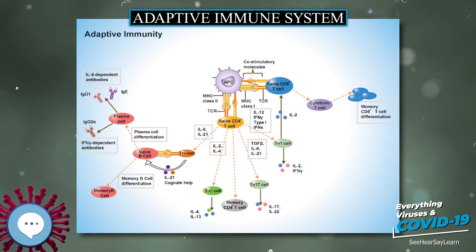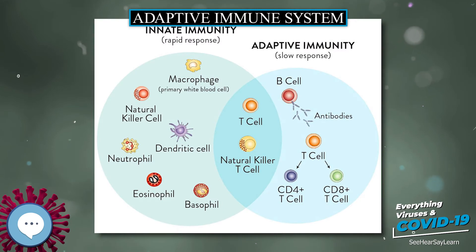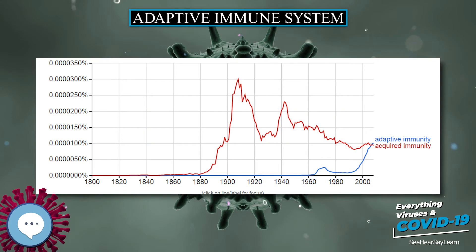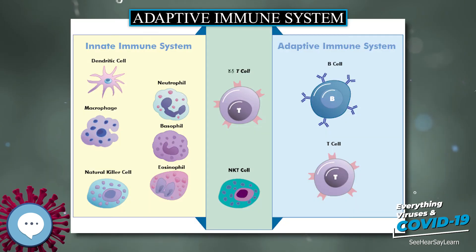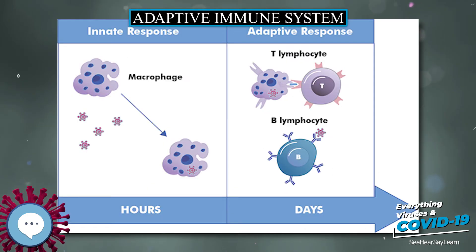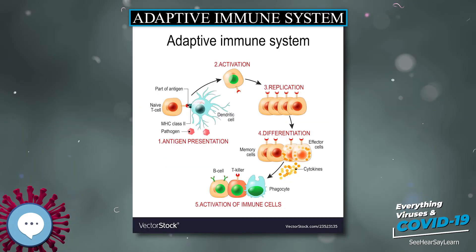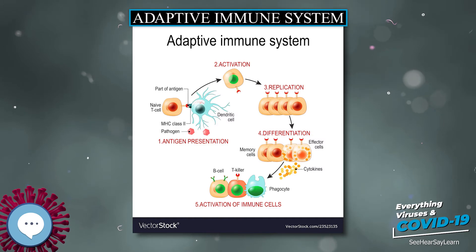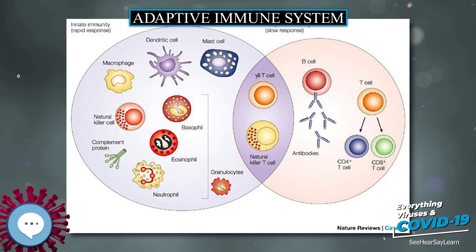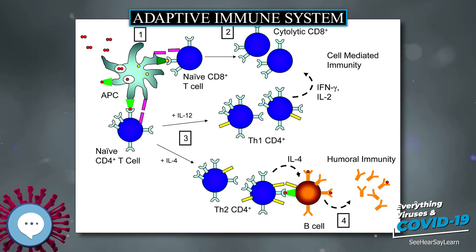Two types of effector CD4+ T helper cell responses can be induced by a professional APC, designated Th1 and Th2, each designed to eliminate different types of pathogens. The factors that dictate whether an infection triggers a Th1 or Th2 type response are not fully understood, but the response generated plays an important role in the clearance of different pathogens. The Th1 response is characterized by the production of interferon-gamma, which activates the bactericidal activities of macrophages and induces B cells to make opsonizing and complement-fixing antibodies, leading to cell-mediated immunity. In general, Th1 responses are more effective against intracellular pathogens — viruses and bacteria that are inside host cells.